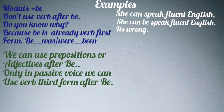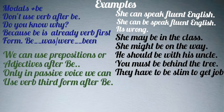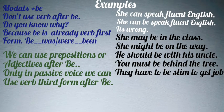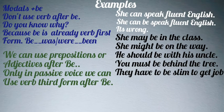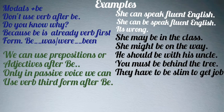Let's look at examples of what to use after 'be.' After 'be' we can use prepositions, numbers, quality, or quantity. For example: 'She may be in the class' — here 'in' is a preposition. 'She might be on the way' — 'on' is a preposition. 'He should be with his uncle' — 'with' is a preposition. 'They have to be slim to get a job' — here 'slim' is an adjective. 'You must be behind the tree' — 'behind' is also a preposition.